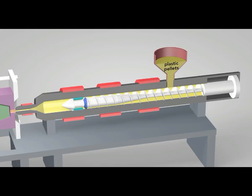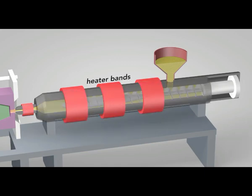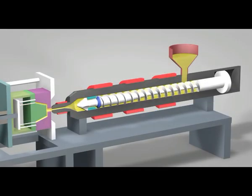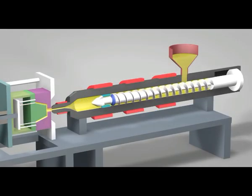Plastic pellets in the hopper feed into the barrel of the injection unit. Inside the barrel, a screw transports the pellets forward. Heater bands wrapped around the barrel warm up the plastic pellets. As the pellets are moved forward by the screw, they gradually melt and are entirely molten by the time they reach the front of the barrel.